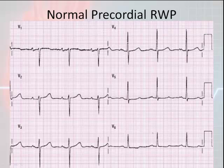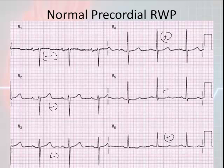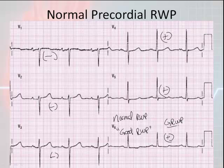This EKG shows a normal R wave progression. V1 starts primarily negative, and V6 ends primarily positive. Following through: primarily negative in V1, negative in V2, primarily negative in V3, then transitioning to positive in V4, positive in V5, and positive in V6. This is considered normal R wave progression. On a 12-lead printout you might see it abbreviated as GRWP — good R wave progression.